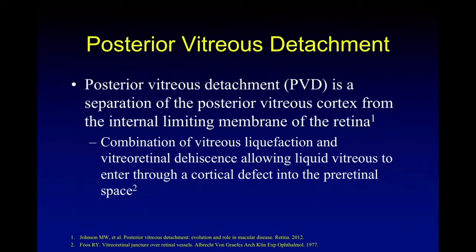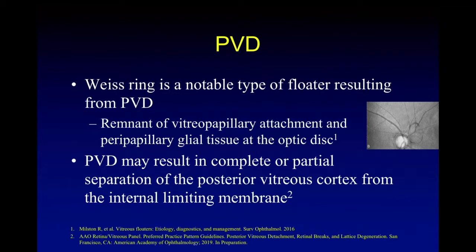Posterior vitreous detachment is separation of the posterior vitreous cortex from the internal limiting membrane of the retina, and usually that's a clear separation. But if part of that posterior vitreous cortex stays on the retina, it may have some proliferation and generate epiretinal membrane. Weiss ring is notable in some patients, as can be seen here next to the disc, and Weiss ring is a remnant of vitropapillary attachment and peripapillary glial tissue.